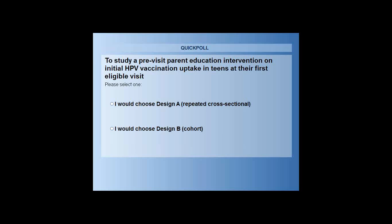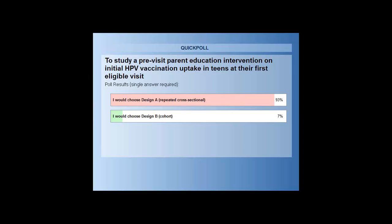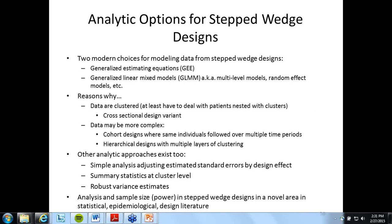The second polling question: to study a pre-visit parent education intervention on initial HPV vaccination uptake in teens at their first eligible visit, which design would you choose? The results clearly indicate repeated cross-sectional, which is commonly used for these kinds of outcomes — generally just a single time point: at that visit, did they get vaccinated or not? These polling questions help you think about the implications of study design, what your outcome is, what you're trying to achieve, and how long it will take you to achieve it.